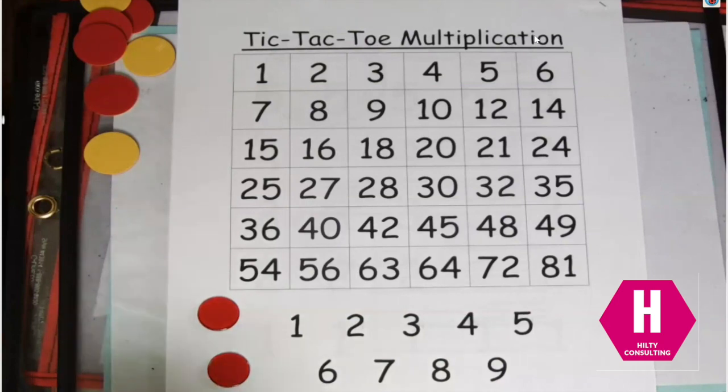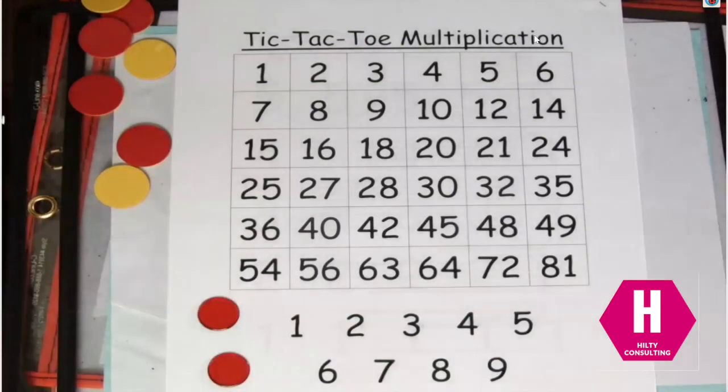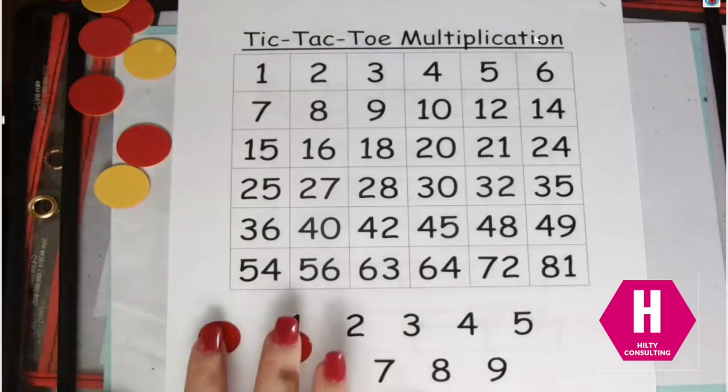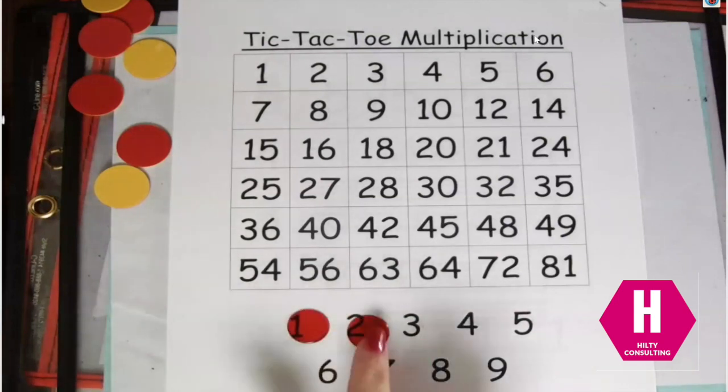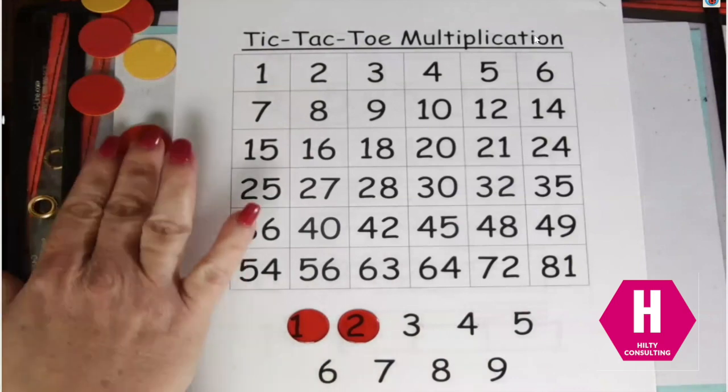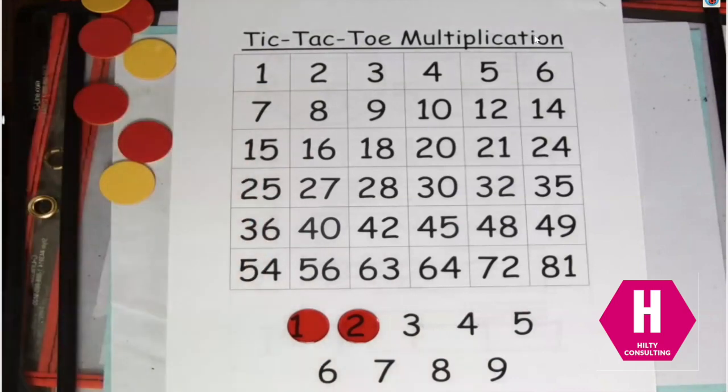To play this game you are going to need different kinds of counters. You are going to need two counters that are see-through because you're going to be using these down here to cover over the factors, and then you need some other kind of counters that you're going to use on the actual game board.